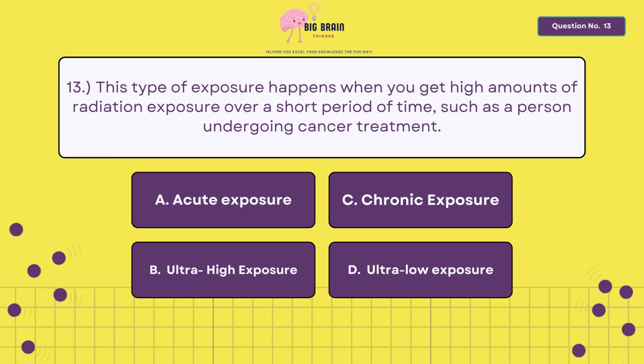Thirteen, this type of exposure happens when you get high amounts of radiation exposure over a short period of time, such as a person undergoing cancer treatment.